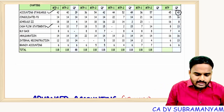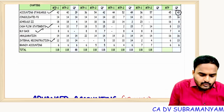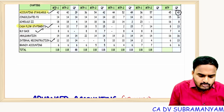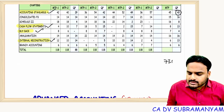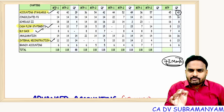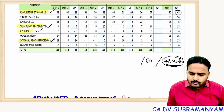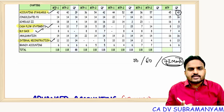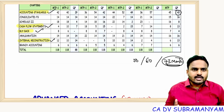After cash flow statements, next prepare buyback, and then internal reconstruction. If you complete these four topics — accounting standards, cash flow statements, buyback, and internal reconstruction — that is 73 marks as per average weightage. If you are able to attempt those 73 marks perfectly, can't you achieve 50 to 60 marks comfortably?